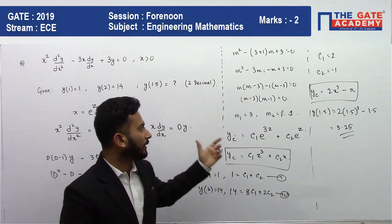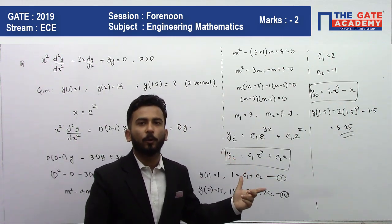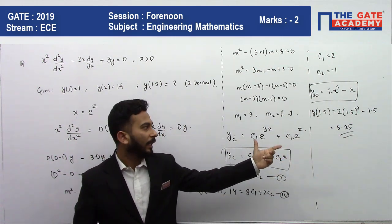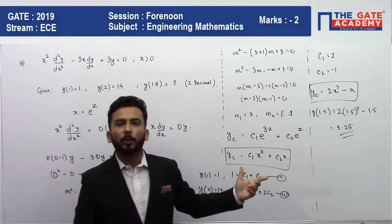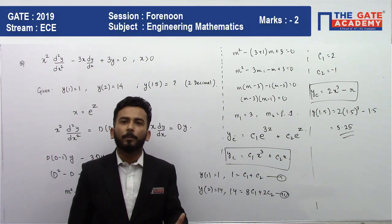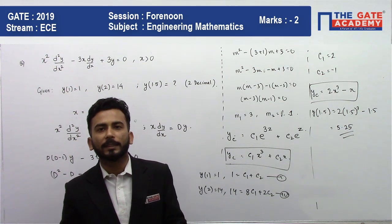You just need to know the method and the substitutions that you need to make. After you make the substitutions, just focus on the calculations and ultimately you will get the answer as 5.25. I hope you liked the video, and if you find this useful, please share it with your friends. Thank you.